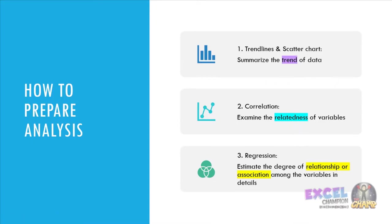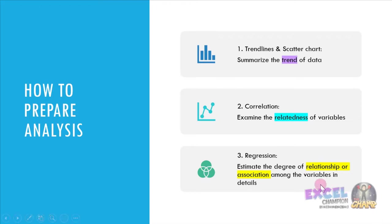How to prepare the analysis? There are three steps. First, we need to prepare a trendline and scatterplot chart because these summarize the trend of data, whether it moves upward or downward. Number two, correlation — correlation will examine the relatedness among the variables between independent and dependent. And lastly, regression, which estimates the degree of relationship or association in detail.